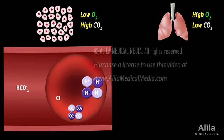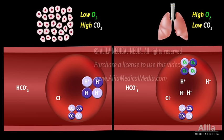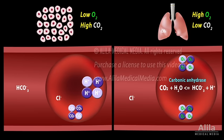When red blood cells reach the lungs, the reverse happens. High oxygen pressure favors its binding to hemoglobin, which releases hydrogen ions and carbon dioxide. The same carbonic anhydrase then converts bicarbonate and hydrogen ions back to carbon dioxide to be breathed out.